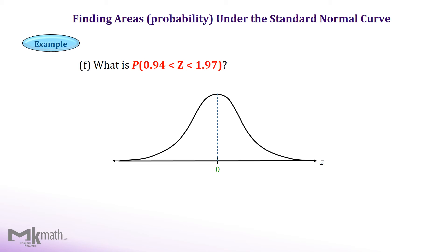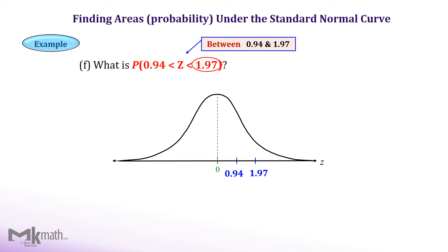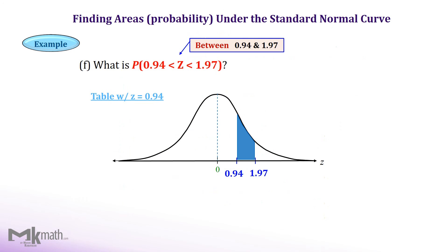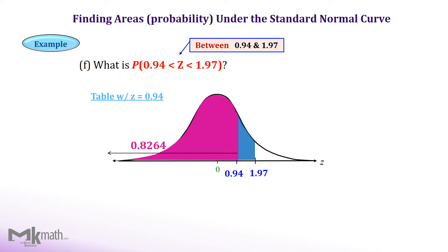Let's take a look at the last example. Mark one of the z-scores, 0.94, on the normal distribution on the right side of the center since it is positive. Then mark the other z-score, 1.97, on the right of 0.94. We read it as between 0.94 and 1.97, so we shade the between area. Let's look up the table using 0.94 first. The intersection of 0.9 and the second decimal place of 4 from the top row gives the left cumulative area to z equal 0.94, which is 0.8264.